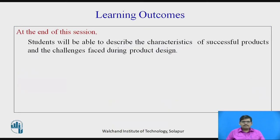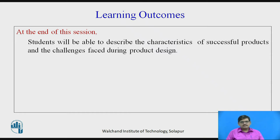Learning Outcomes: Students will be able to describe the characteristics of successful products and the challenges faced during product design. As we all know, industrial design or simply product design is carried out to develop successful products. The success of the product is the desired output of the manufacturer. A successful product satisfies the customer needs to the maximum extent and generates profit for the company or manufacturer.